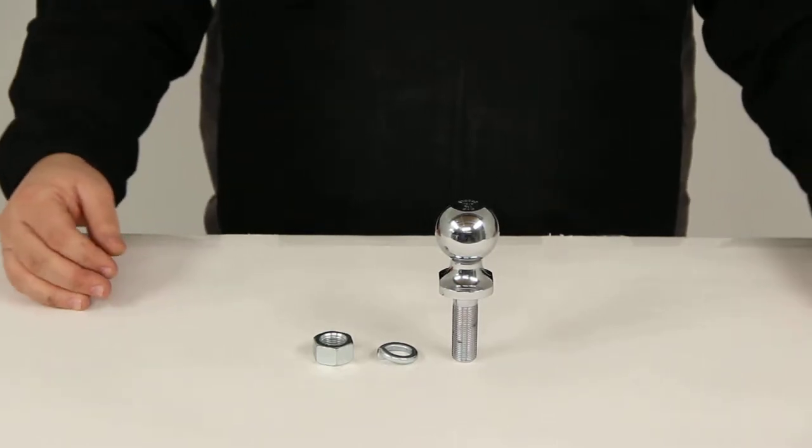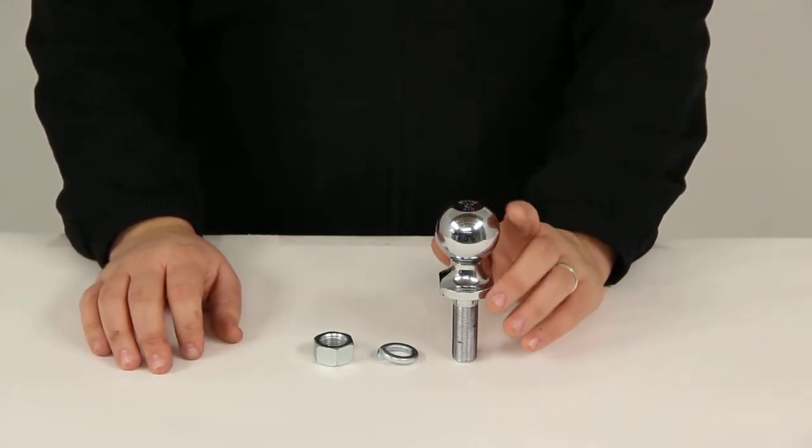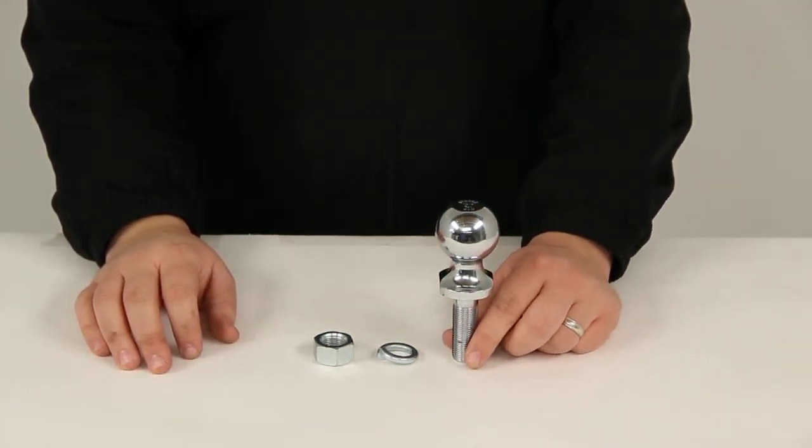Today we'll be reviewing part number 19257. This is the TowReady hitch ball with a 1 and 7/8 inch ball diameter. It has a medium shank and is rated at 2,000 pounds.